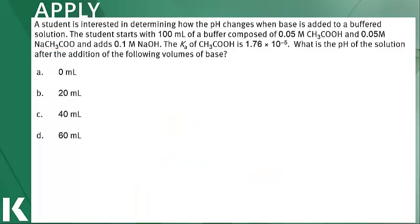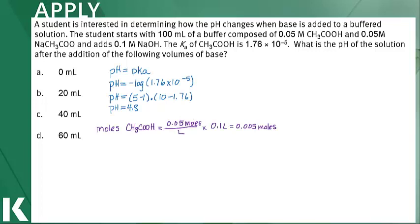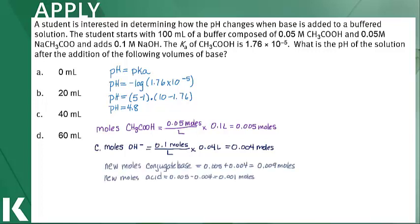For 40 milliliters of sodium hydroxide, I calculate: 0.1 mol/L × 0.04 L = 0.004 moles of hydroxide ions. Adding to conjugate base: 0.005 + 0.004 = 0.009 moles. Subtracting from acid: 0.005 − 0.004 = 0.001 moles of acid remaining. Plugging into Henderson-Hasselbalch: pH = 4.8 + log(0.009/0.001) = 5.75. There's a slightly larger change in pH here, but it's still not that much because I've not completely neutralized my acid.